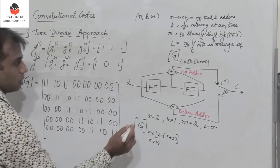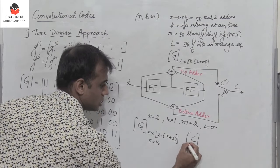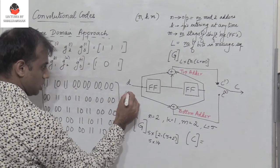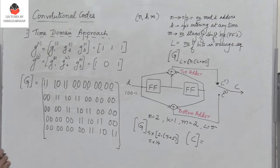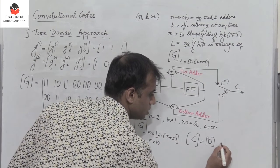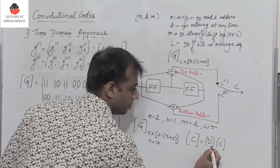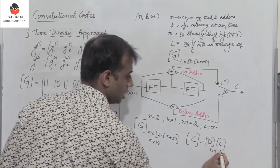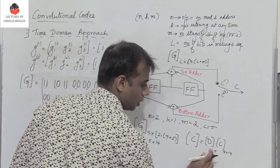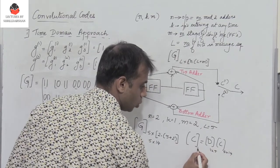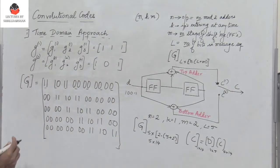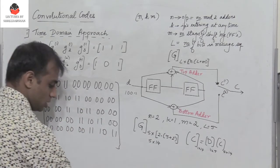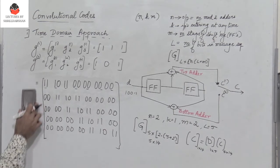The output C is computed as C = D × G with modulo-2 addition, where D is the 1×5 message vector [1, 0, 0, 1, 1] and G is the 5×14 generator matrix. The result C is a 1×14 matrix. Since D has 0s in positions 2 and 3, rows 2 and 3 of G are always multiplied by 0, so only rows 1, 4, and 5 need to be considered.